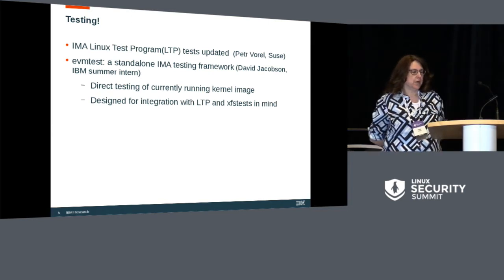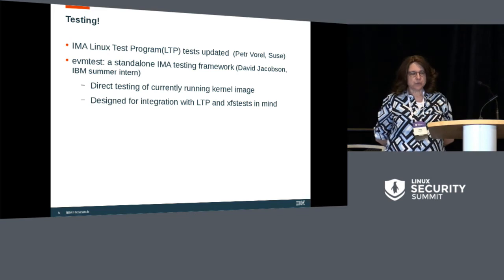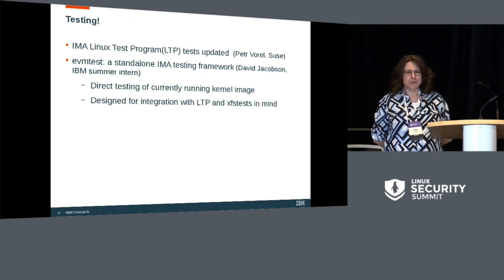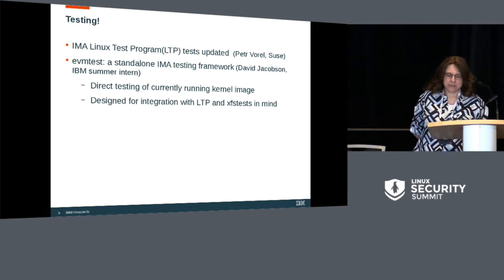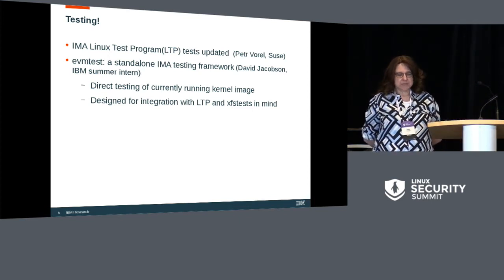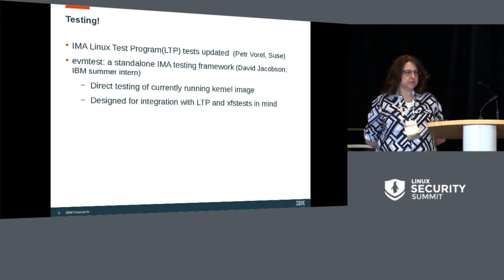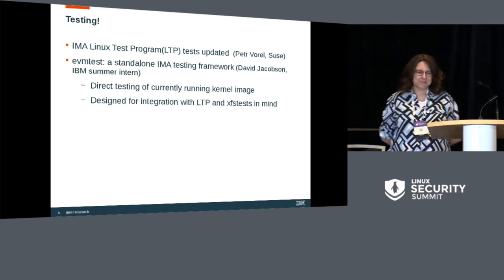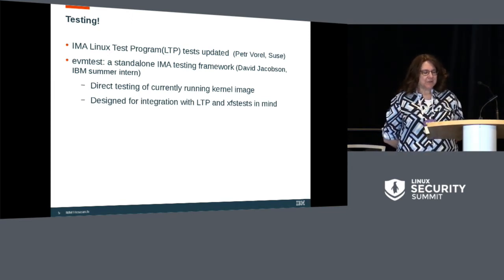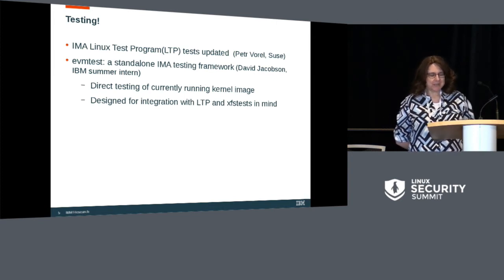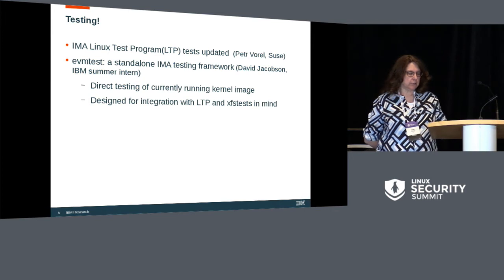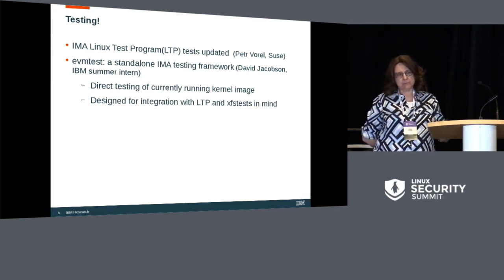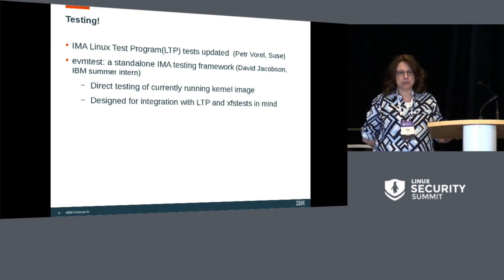David Jacobson worked with our team starting to write a regression testing framework for IMA, which will be in IMA EVM Utils and needs some review. The purpose is so that we can have a standalone test suite — just like Casey was saying — so that other parts of the kernel aren't breaking it and everybody can do their own regression testing. It's meant to be used directly on the running kernel, and once upstreamed it will be included in IMA EVM Utils.